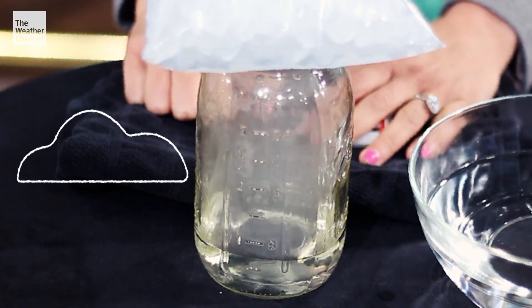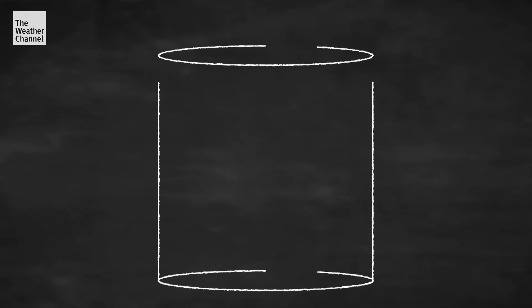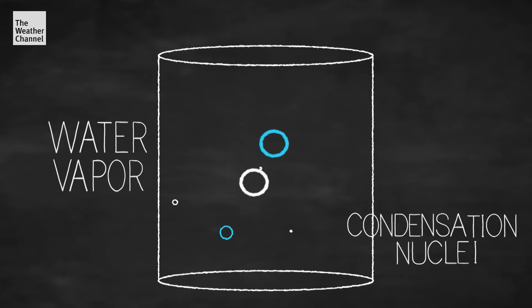So, how does a jar mimic the atmosphere? Well, what you can't see in the jar, and also in the atmosphere, is that there's a ton of water vapor molecules and condensation nuclei.